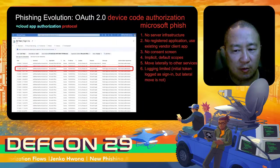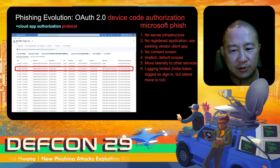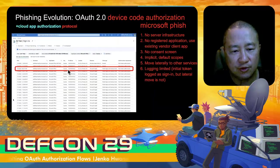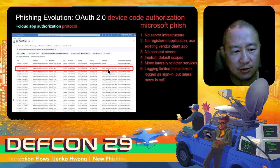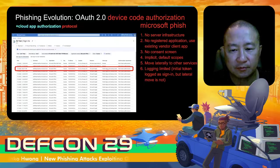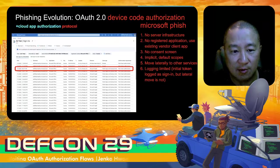Microsoft allows lateral movement to other services — or resources I should say — as that user, by being able to refresh a token for a different resource. Logging is limited. What is logged is when the attacker actually retrieves the OAuth token: their IP address is logged and it shows as an actual authentication or sign-in in the Azure sign-in logs for this user. But this is limited because the lateral move is not logged — when we refreshed the token to get an Azure access token, that was not logged.